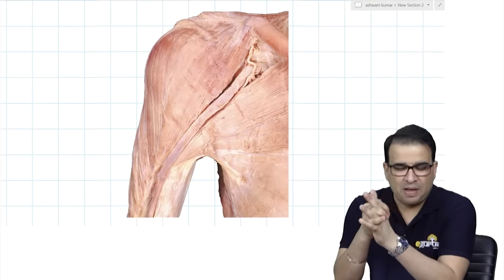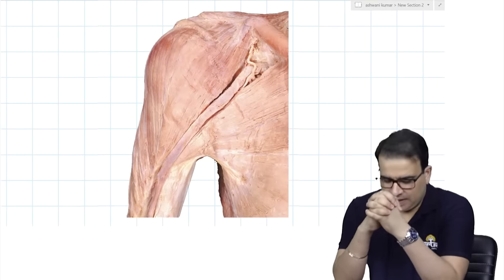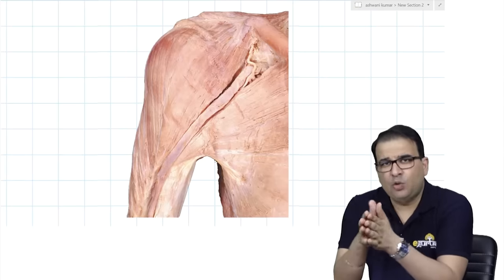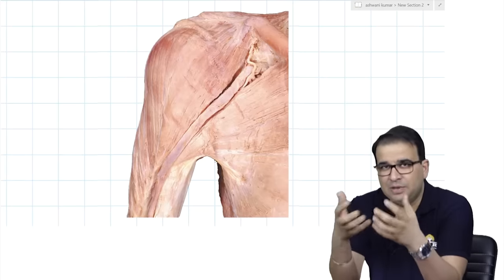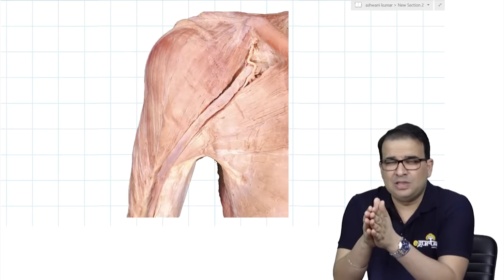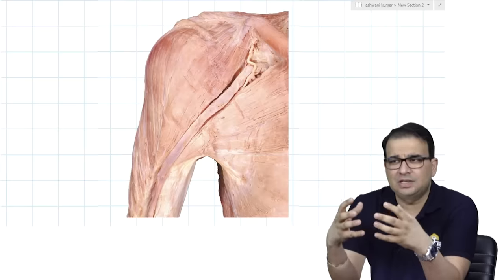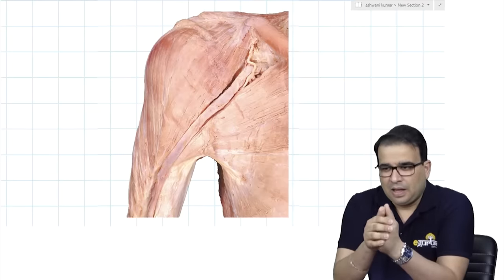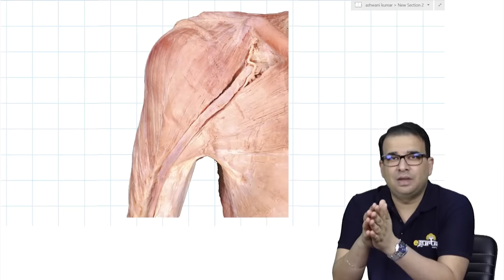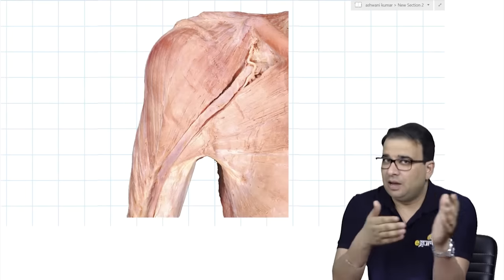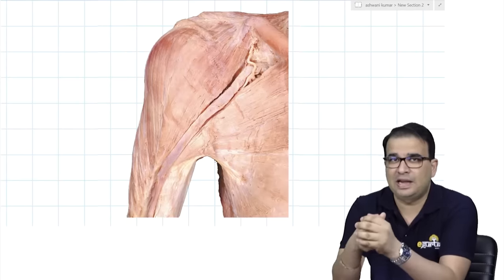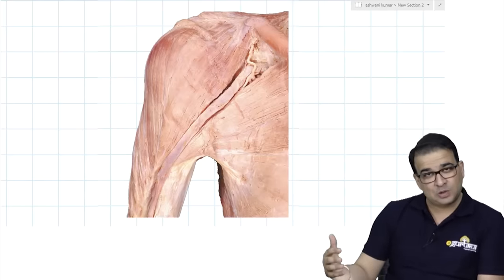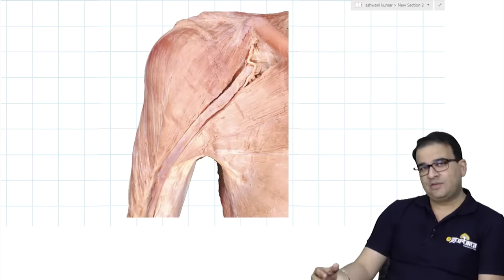Hello everyone, this is Dr. Ashwini Kumar. Today I'm here to discuss cadaveric image-based questions asked in recent AIIMS exams. We are not going to discuss the questions themselves but the images of the upper limb. Usually we discuss these images using schematic line diagrams, but looking at the recent AIIMS pattern, they are switching toward questions based on cadaver images. NEET also recently asked a cadaveric image question on a forearm muscle, so we need to learn to identify structures on cadaveric images.